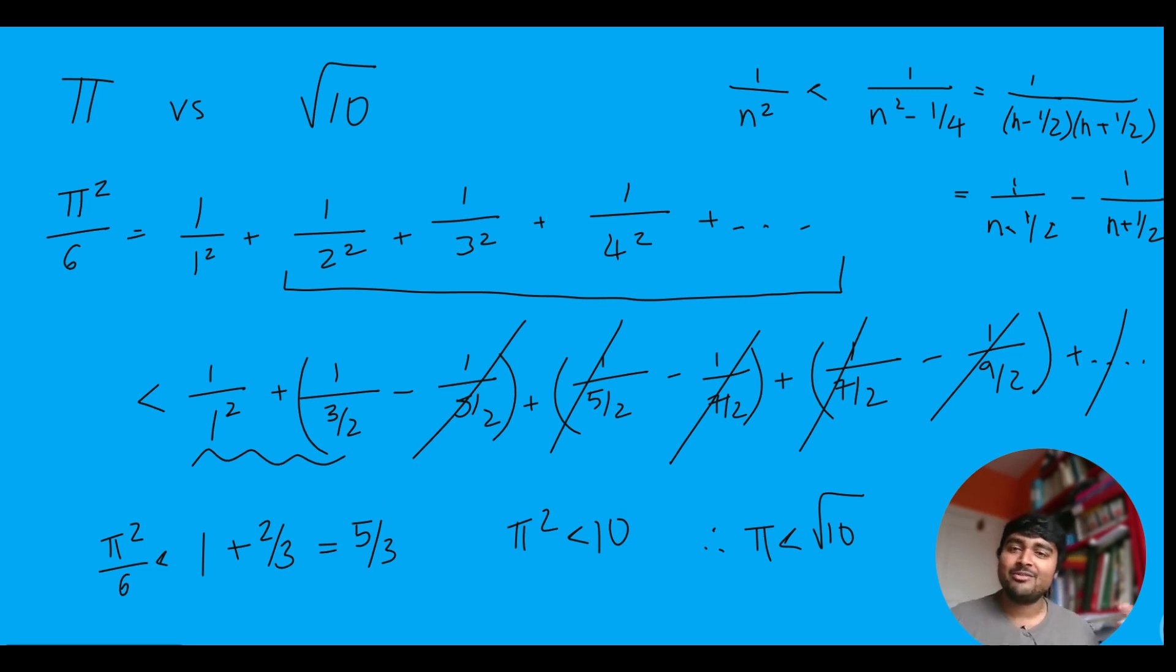And this is a pretty cool proof. I don't think we use anything too fancy. I mean, maybe you could argue that this is kind of an advanced result, but I've made a video on it. It's a pretty common result. Not easy to prove, but a nice little result. And yeah, we managed to prove that pi is less than the square root of 10.